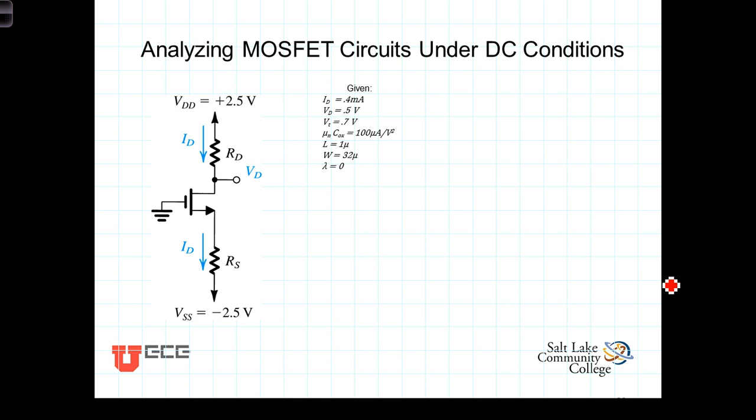we're asked to determine the values of R-sub-D and R-sub-S that will make it so that we've got 0.4 milliamps flowing through the transistor. So the I-sub-D is equal to 0.4 milliamps, and the voltage at the drain is 0.5 volts. Now what can we tell from that? Well, if the voltage at the drain is 0.5 volts and the voltage at the gate is 0, can we tell what state the transistor is in?